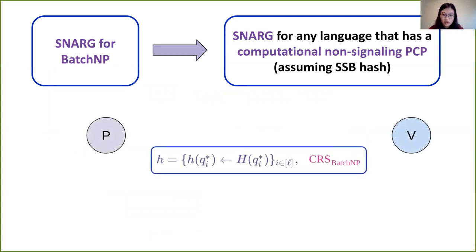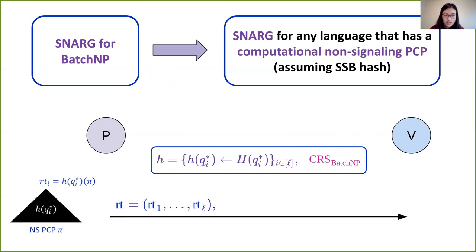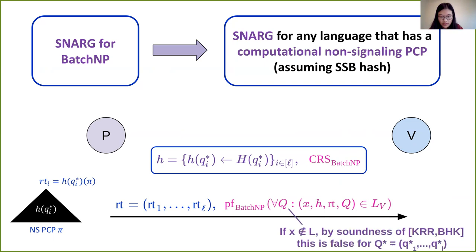Our SNARG construction works as follows. The common random string consists of all L hash keys binding on the L PCP query locations, along with a CRS for the batch NP SNARG. The prover computes the commitment and sends it along with a SNARG proving that for all queries Q, the resulting statement is in language LV. If x is not in the language L, then by the soundness of KRR and the SSB hash, this is false — in particular for the special Q-star that was encrypted. So the prover cannot generate a valid proof, establishing soundness.